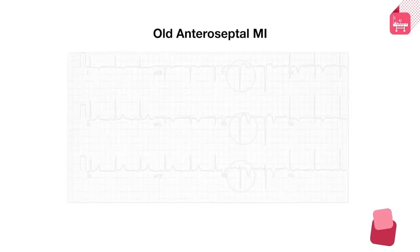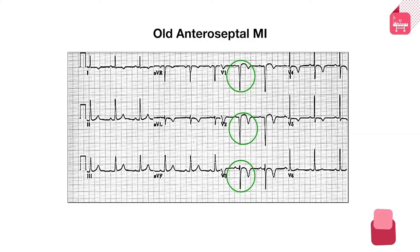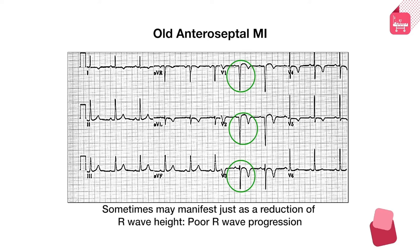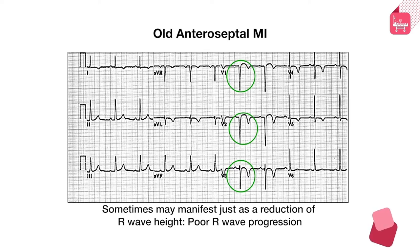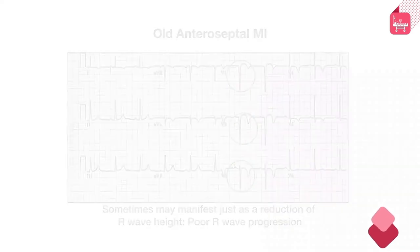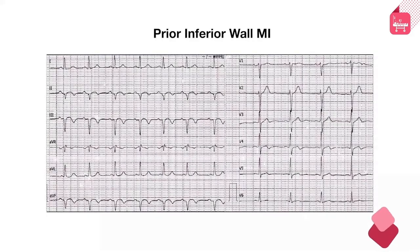This is an example of an old anteroseptal MI. You can see the Q waves circled in green in V1 and V2. In V3 there is no complete Q wave due to a small positive R wave. With smaller infarcts, a complete Q wave may not develop; instead, there is just a reduction in R wave amplitude — referred to as poor R wave progression — which should also be kept in mind.